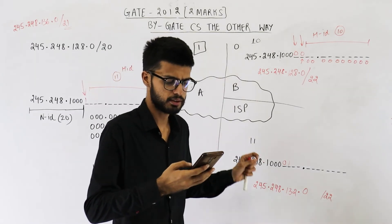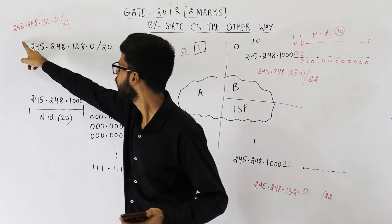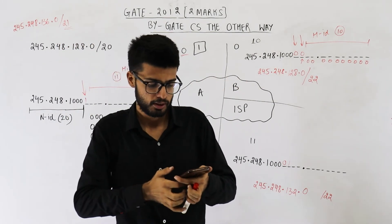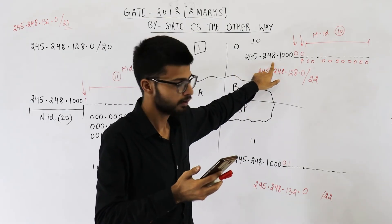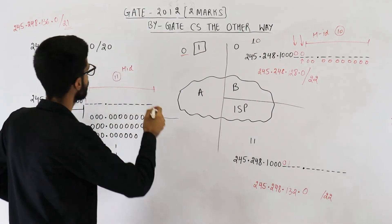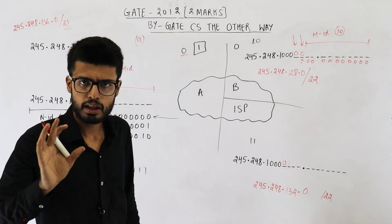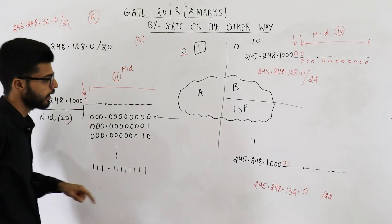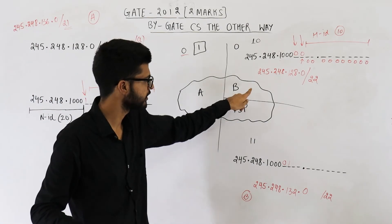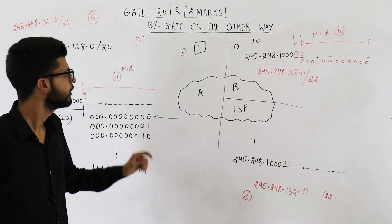Now let us see which option is the correct answer. Option A says 245.248.136.0/21 is given to organization A — that is correct. Option A also says 245.248.128.0/22 is given to B — that is also correct. So the answer is option A. Note that either of the two /22 subnets can be given to B, since the question only specifies a quarter of addresses to B without specifying which quarter. Any one fourth can be given to B.